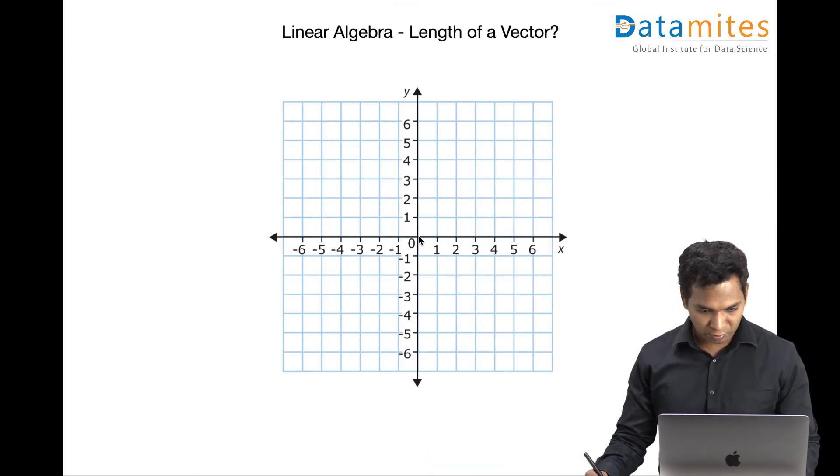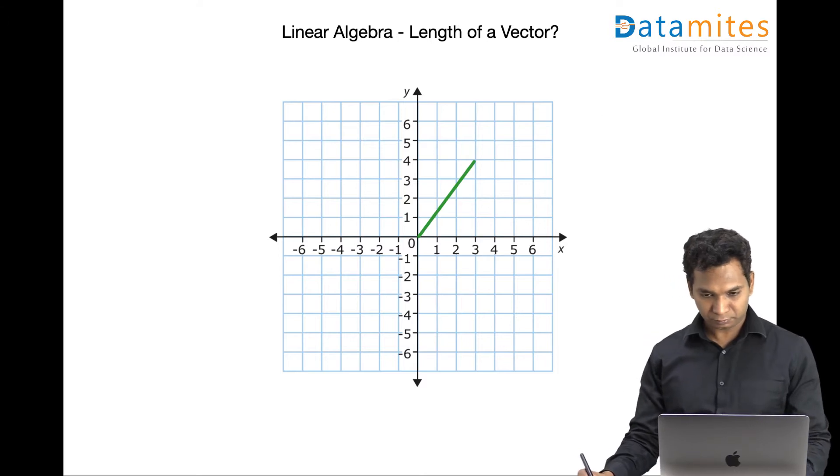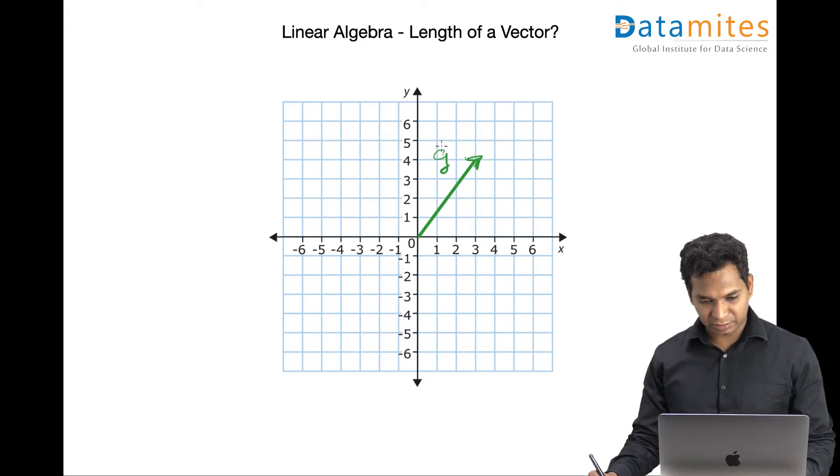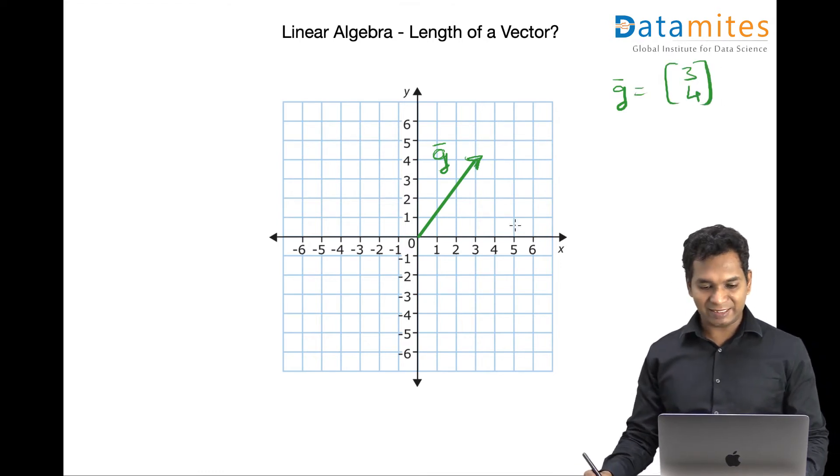So I'm going to take a 3-4 vector. I'm going to call this vector g. The g vector is equal to 3 and 4, where 3 is the number of units on your x-axis and 4 is the number of units on your y-axis.